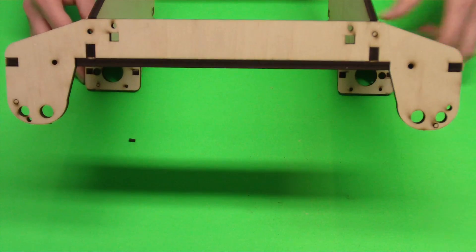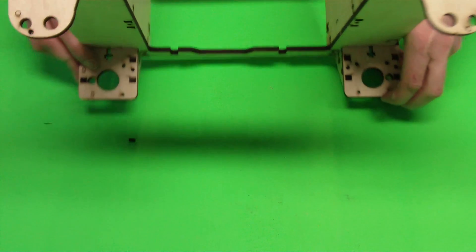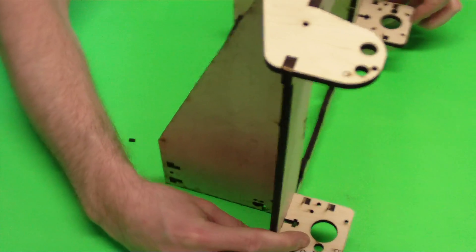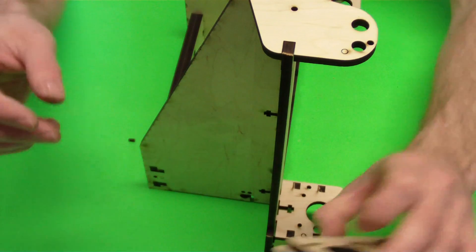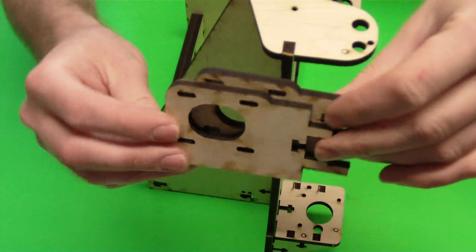These extra holes here, those are for our LCD mounts. Then the very last thing that we would put on, we're not going to do it quite yet, but we have our mounts for our motor.